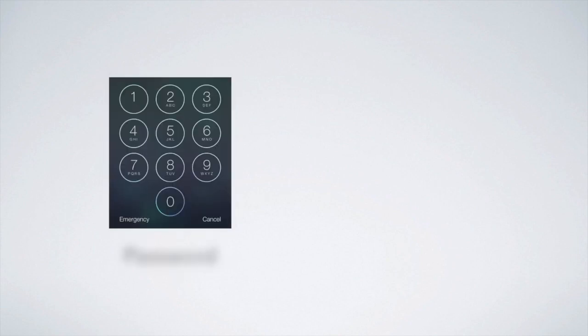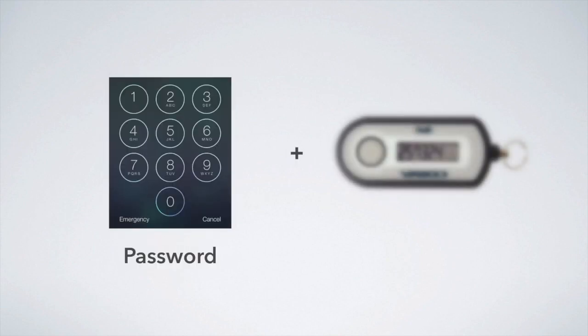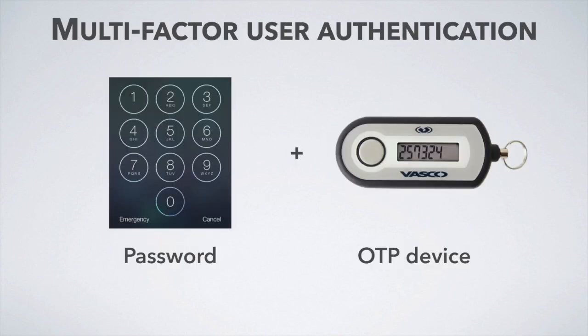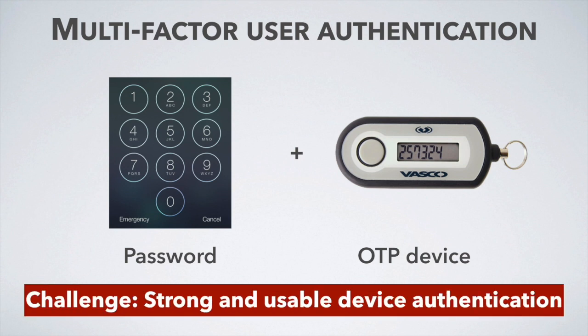As password breach cases become increasingly common, multi-factor authentication has been widely used, requiring users to provide a second piece of identifying information in addition to a password. For example, a one-time password or PIN, known as OTP, can be incorporated in multi-factor authentication by requiring physical access to an OTP generator that the user owns. However, OTP devices can be inconvenient to carry around, so we need to provide a strong and usable device authentication method.